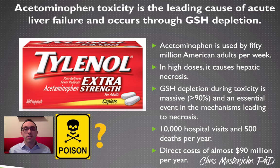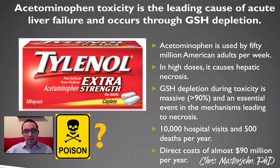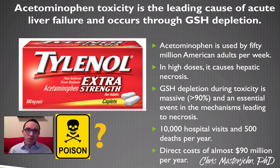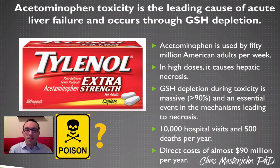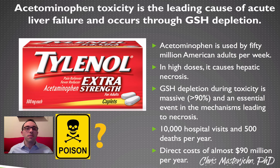So you have this combination of glutathione depletion and NAPQI accumulation that together are wreaking havoc on the cell and causing those cells to die a very gruesome death. In the worst case scenarios that leads to people dying. If you go to the emergency room, they're going to treat you with N-acetylcysteine, which is meant to supply the cysteine necessary for the synthesis of new glutathione. So even the treatment for this toxicity is all based around glutathione metabolism.